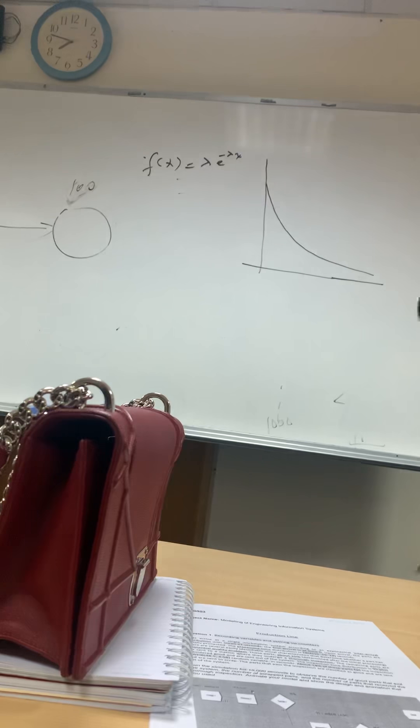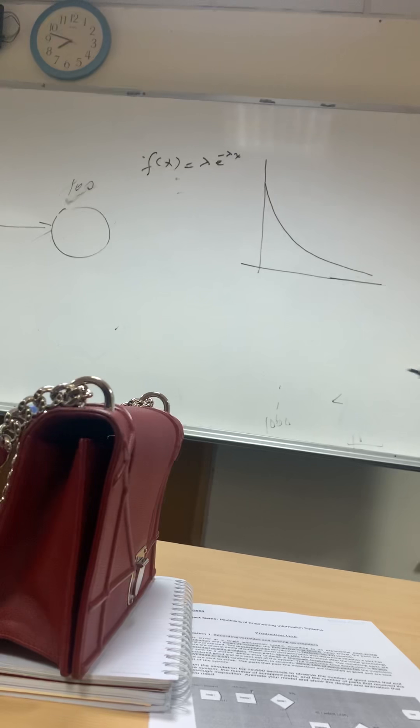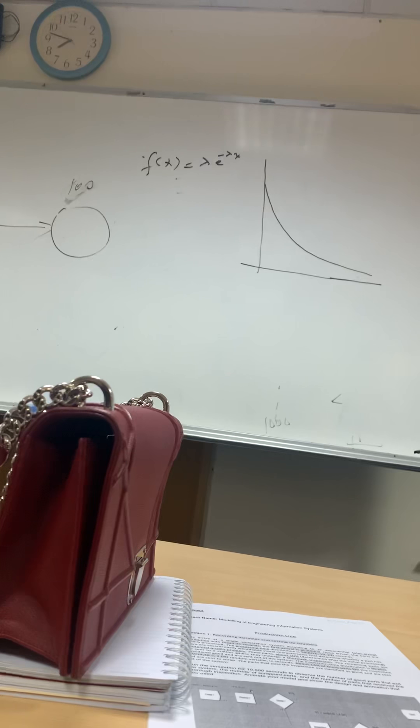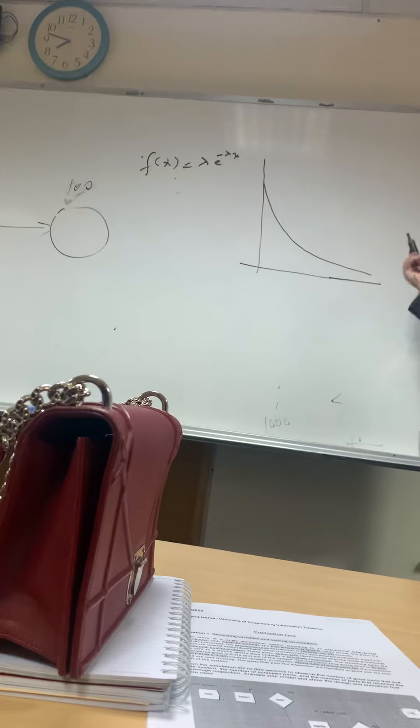How do we check this is a density function? The area is equal to one. So the area from minus infinity to infinity of lambda e to the minus lambda x dx equals one.